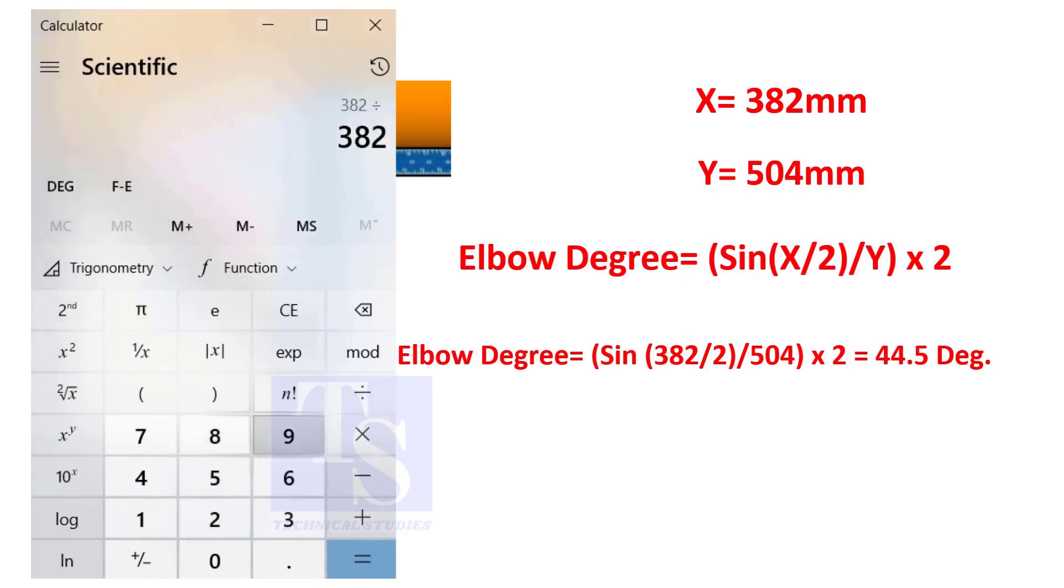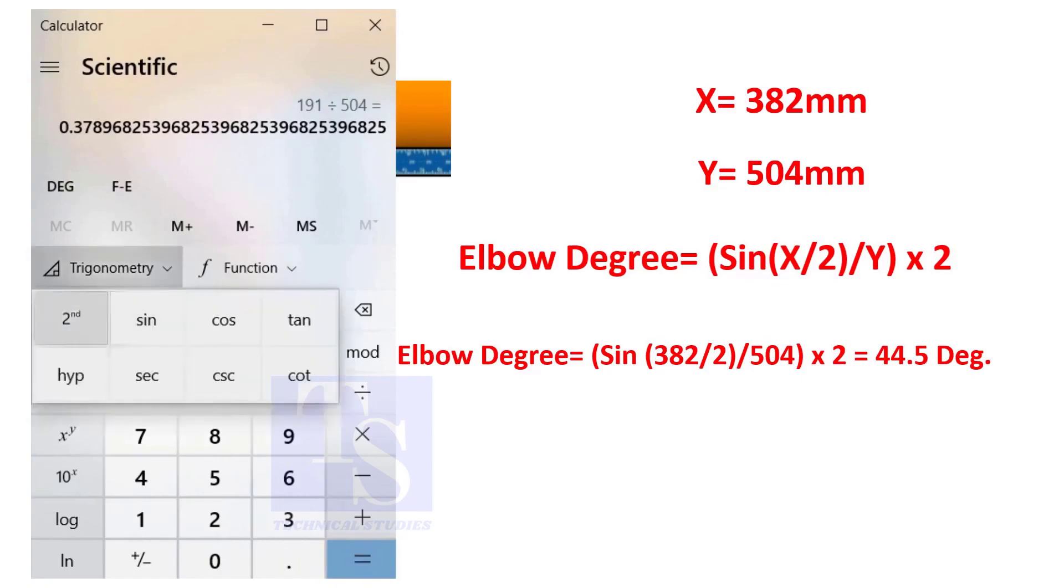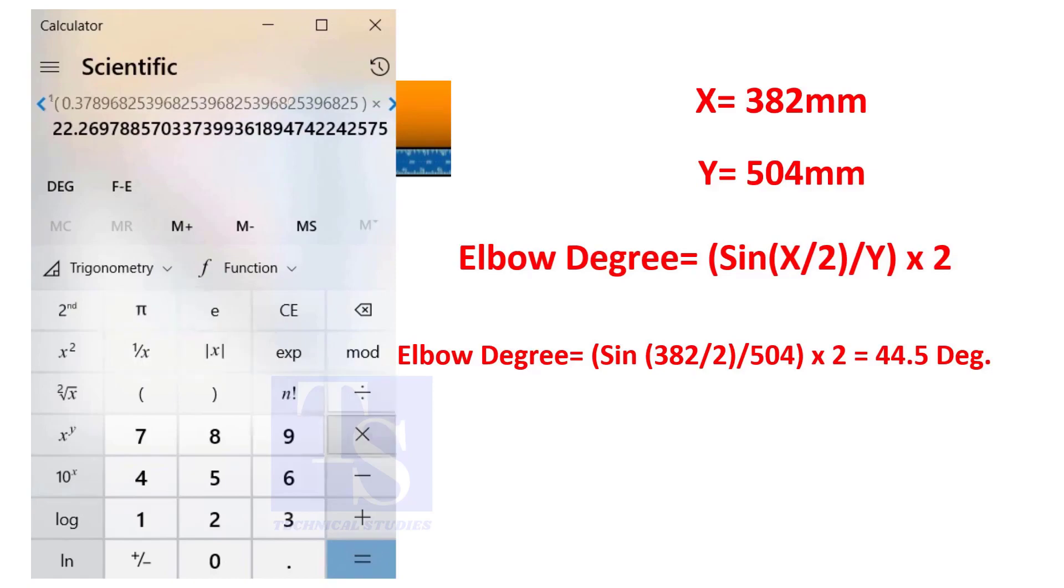You can try this method on pipe spools to measure the distortion due to the welding. So, the degree of the elbow is 44.5.